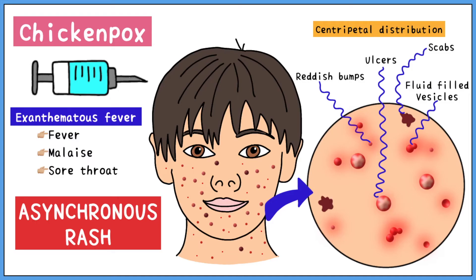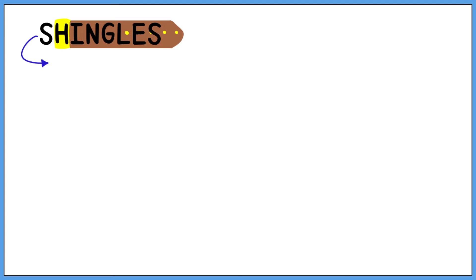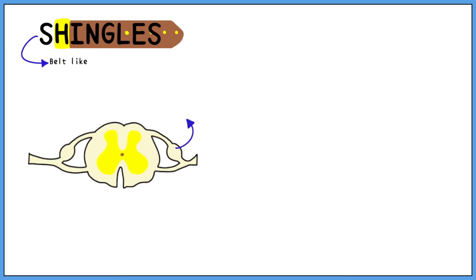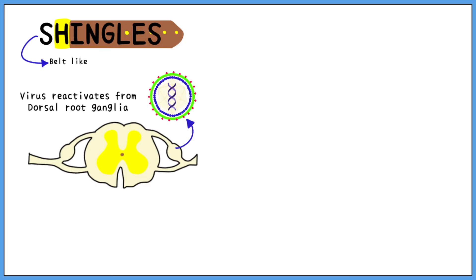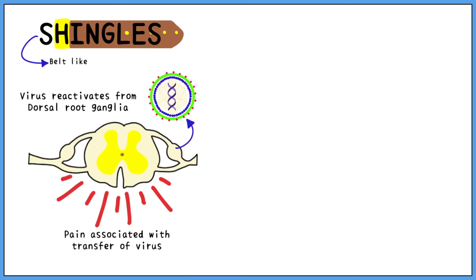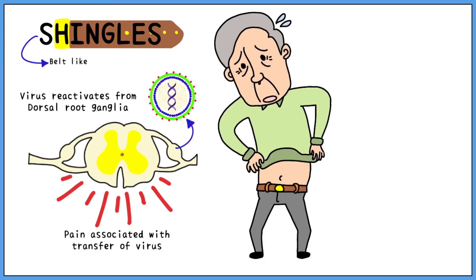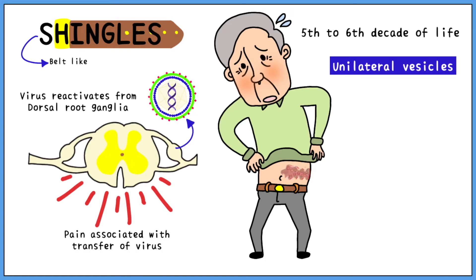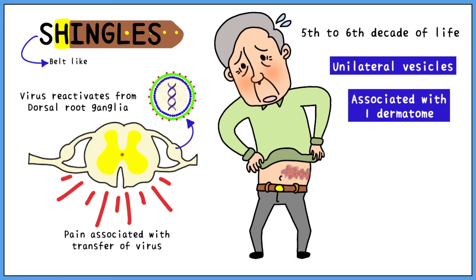Since the discovery of the vaccine, the incidence of chickenpox has greatly reduced. Shingles literally means belt-like. It is caused by reactivation of the virus from the dorsal root ganglia at a later stage in life. It is a very painful condition, and the pain is usually associated with transfer of the virus along the nerves. This condition is usually seen in the fifth to sixth decade of life, or when the body's immunity to the virus falls to ineffective levels.